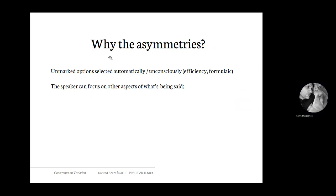So why do these asymmetries even exist? The unmarked default options are selected automatically and unconsciously. This is important because unconscious processing acts in the service of efficiency, which is a very common theme in formulaic language. One amazing thing about formulaic language is that it makes speech more fluent and more efficient. When you use formulaic expressions, which are automatic, you can focus on other things — your brain can focus on other aspects of what's being said, not on the selection of the exact expression.